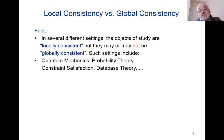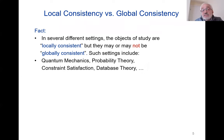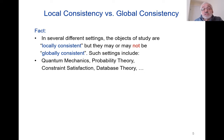There are several different settings in science where this interplay between local consistency and global consistency arises very naturally. For instance, Samson Abramsky and his group at Oxford and now at UCL, for the past 15 years, have studied the phenomenon of contextuality in quantum mechanics. Contextuality is really a situation where you have local consistency...